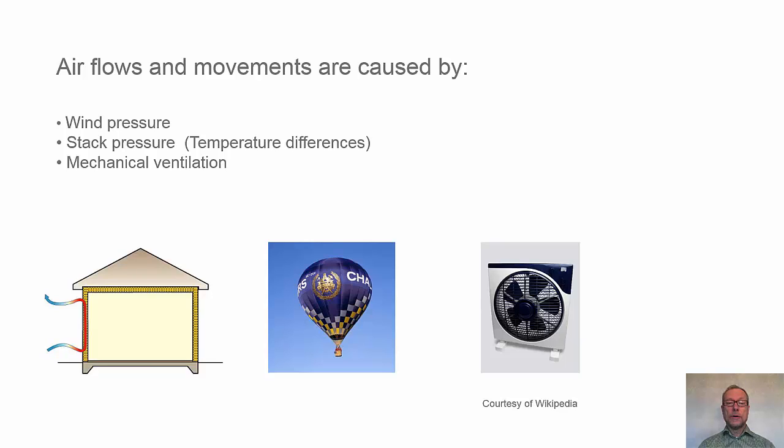The stack pressure caused by temperature differences is symbolized with the hot air balloon here in the picture. The hot air is warmer with lower density, and it starts to act on the air volume. We have a buoyancy effect so it wants to go upwards. And we have mechanical ventilation, symbolized with the fan here in the picture.